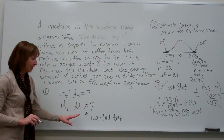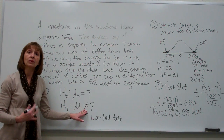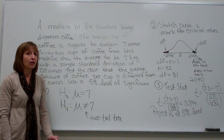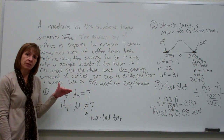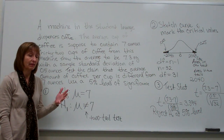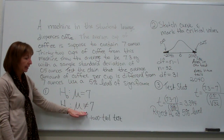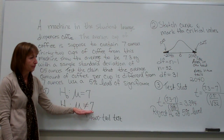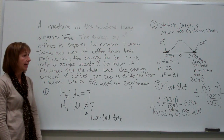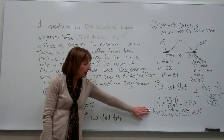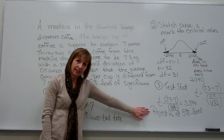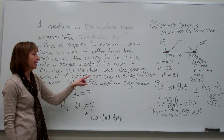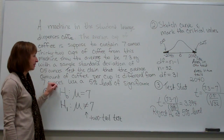Because we did the hypothesis test with the not-equal-to alternate, we can only state it that way. If we wanted to say it looks bigger, we'd need a separate test with the alternate that mu is greater than 7 — but that's not what was asked here. So we can only provide sufficient evidence for what was in the alternate as tested. For our fourth step, we write a sentence: reject the null at the 5% level of significance. Our data indicates that the average amount of coffee per cup is different from 7 ounces at the 5% level of significance.